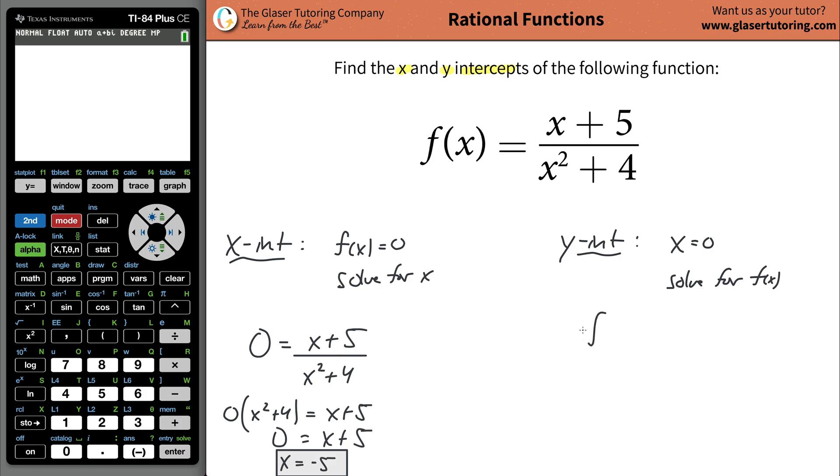So we write the function f of x is going to be equal to now 0 plus 5. So if we see an x, simply plug in a 0, divided by 0 squared plus 4. So f of x is going to be equal to 5 over 4. In other words, your y intercept, remember f of x you can think of as y, is going to be equal to 5 over 4.